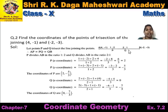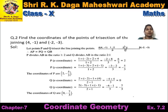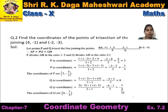For point Q, using ratio 2 to 1: X-coordinate of Q = (2×(-2) + 1×4) / (2 + 1) = (-4 + 4) / 3 = 0/3 = 0. Y-coordinate of Q = (2×(-3) + 1×(-1)) / (2 + 1) = (-6 - 1) / 3 = -7/3. Hence, the coordinates of point Q are (0, -7/3).